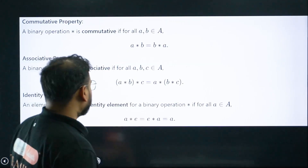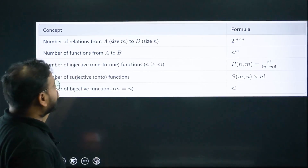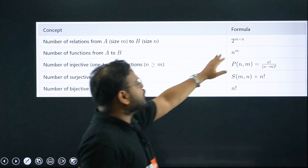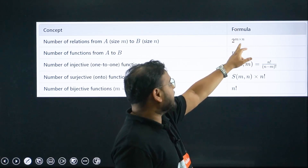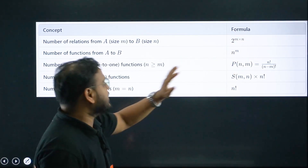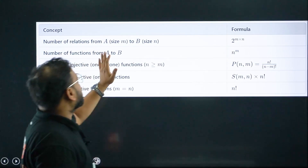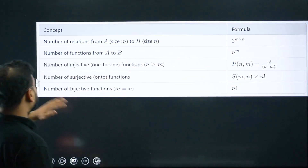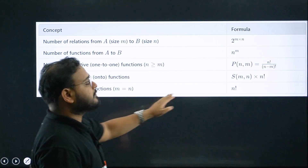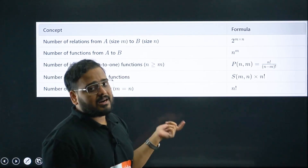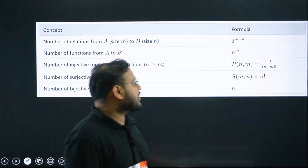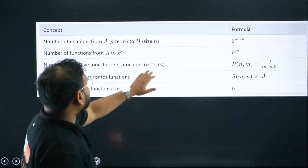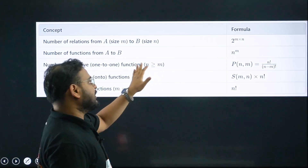Some important formulas: number of relations from set A to set B is 2^(m×n), where m is the cardinal number of set A and n is the cardinal number of set B. Number of functions from A to B is n^m — a PYQ has been asked on this. Number of bijections from A to B when both sets have the same cardinal number is n factorial. Also, n must be greater than or equal to m to write bijections.